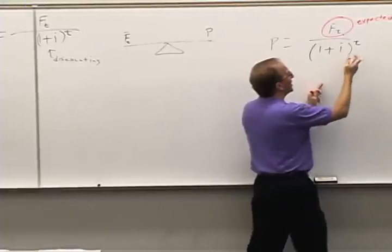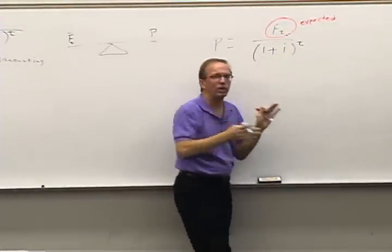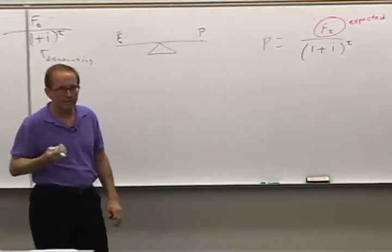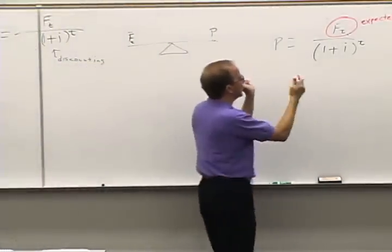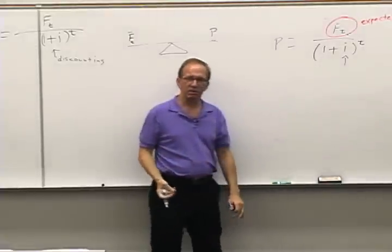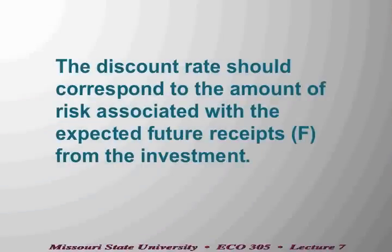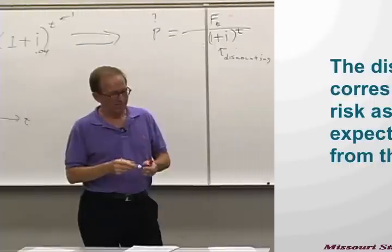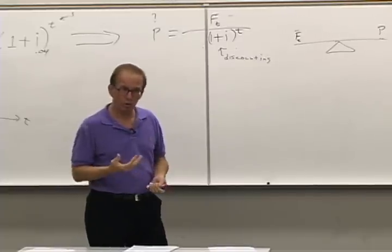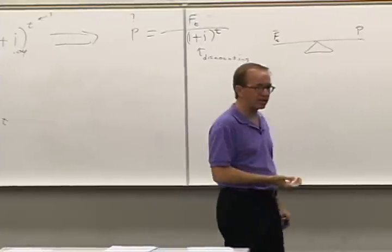Here's the deal. If you have a very high degree of certainty attached to a number, then when you do the discounting you should use an interest rate that is a very certain type. The people who loan money to the United States government say the government is going to be in business for a long time — 10, 20, 30 years for sure — and they are not going to default on that debt. So when people loan money to the US government, it's a pretty low interest rate.